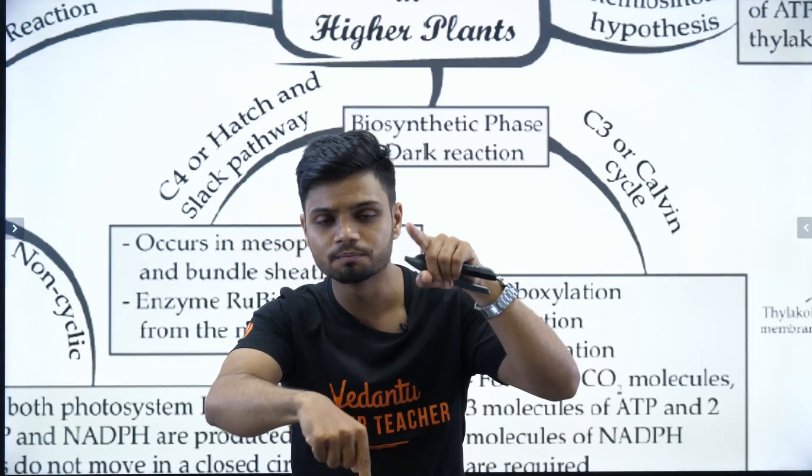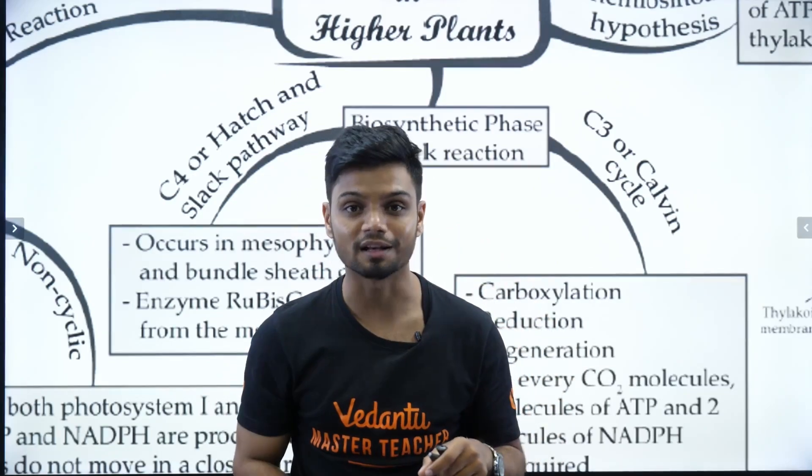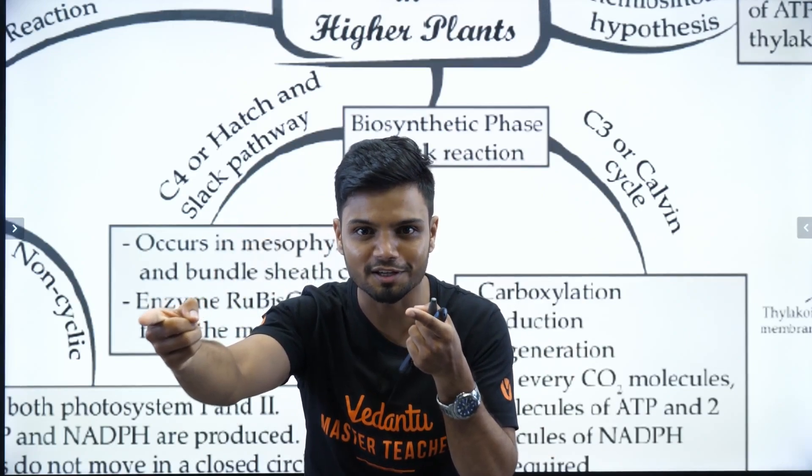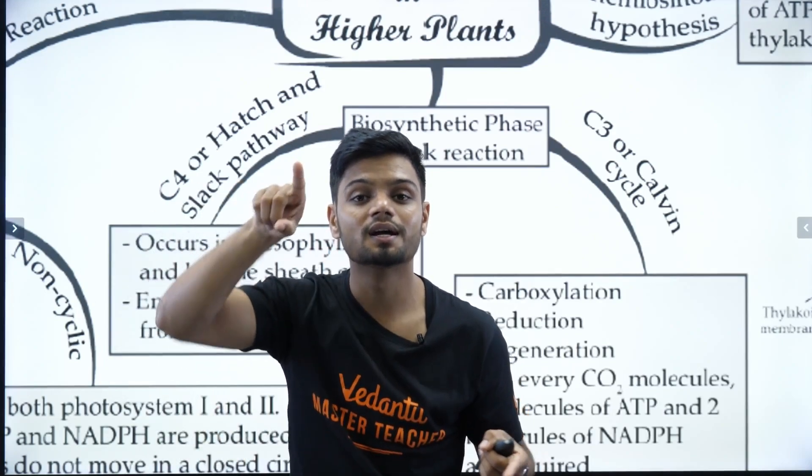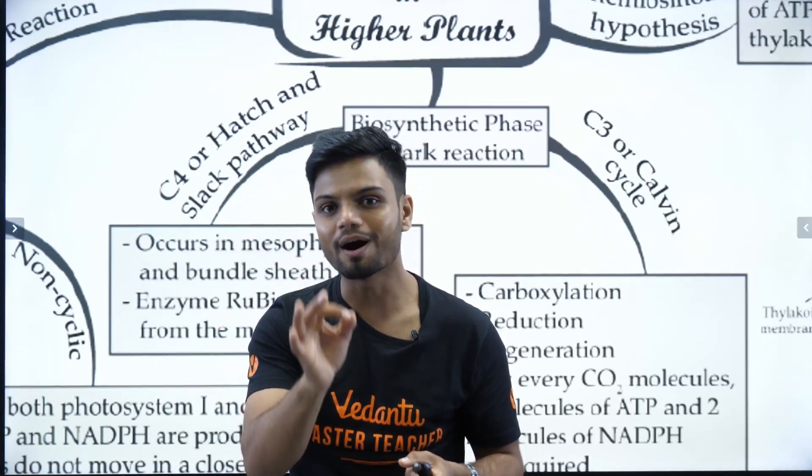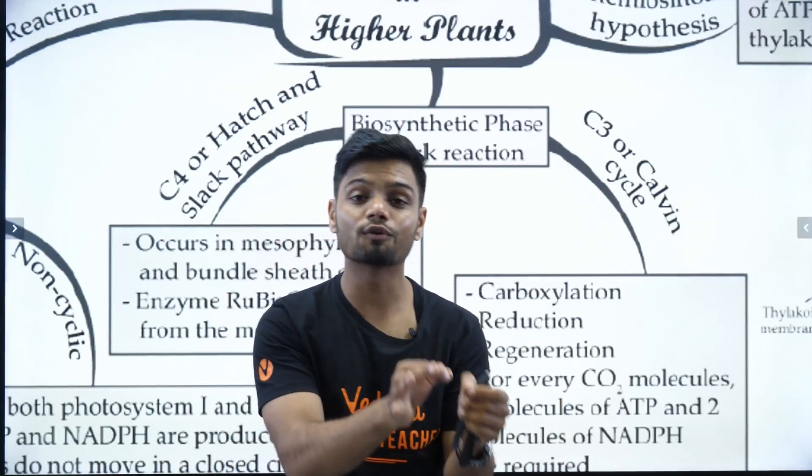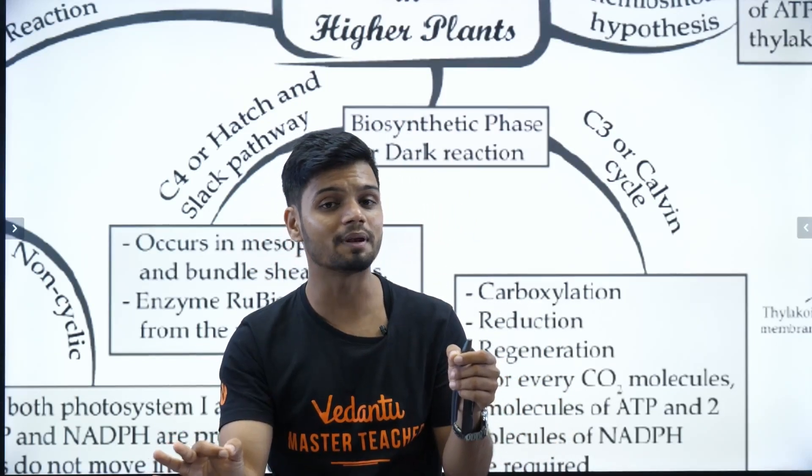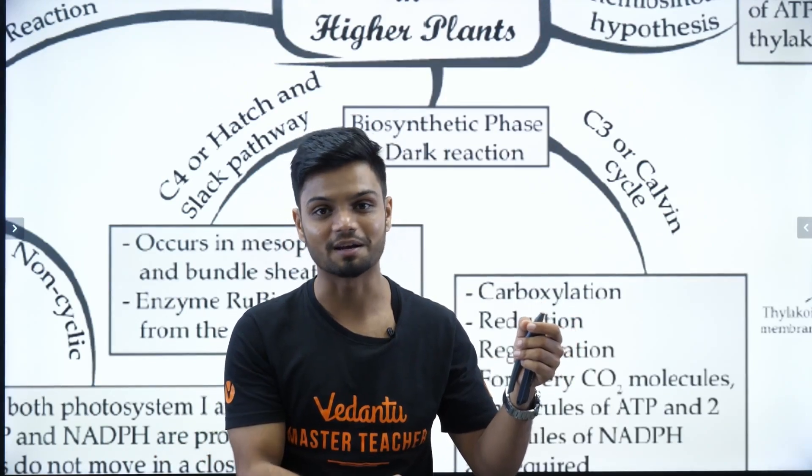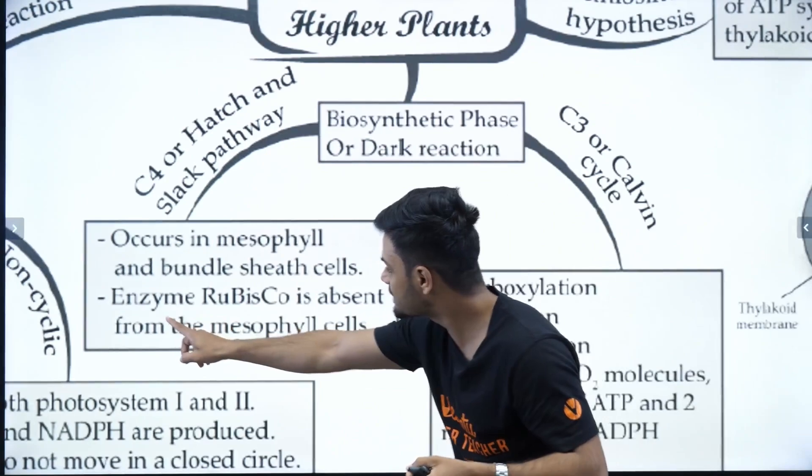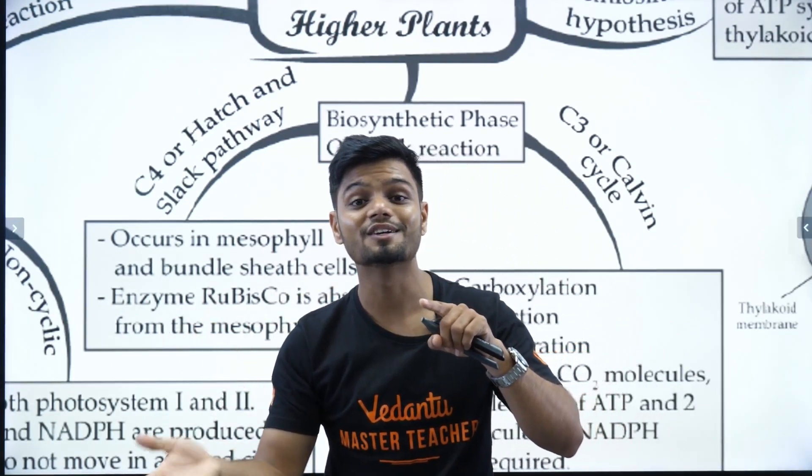Now, this malic acid is sent to the bundle sheath later on. Now, inside bundle sheath, the second cell, the malic acid is converted to pyruvic acid with the release of CO2. And that CO2 again undergoes C3 cycle. So, if you ask me in C4 cycle, is C3 cycle happening? Yes, sir. In C4 cycle, C3 cycle is also happening in the case of bundle sheath cells where you have Rubisco enzyme. So, enzyme Rubisco is absent from mesophyll cells but it is present in bundle sheath cells.